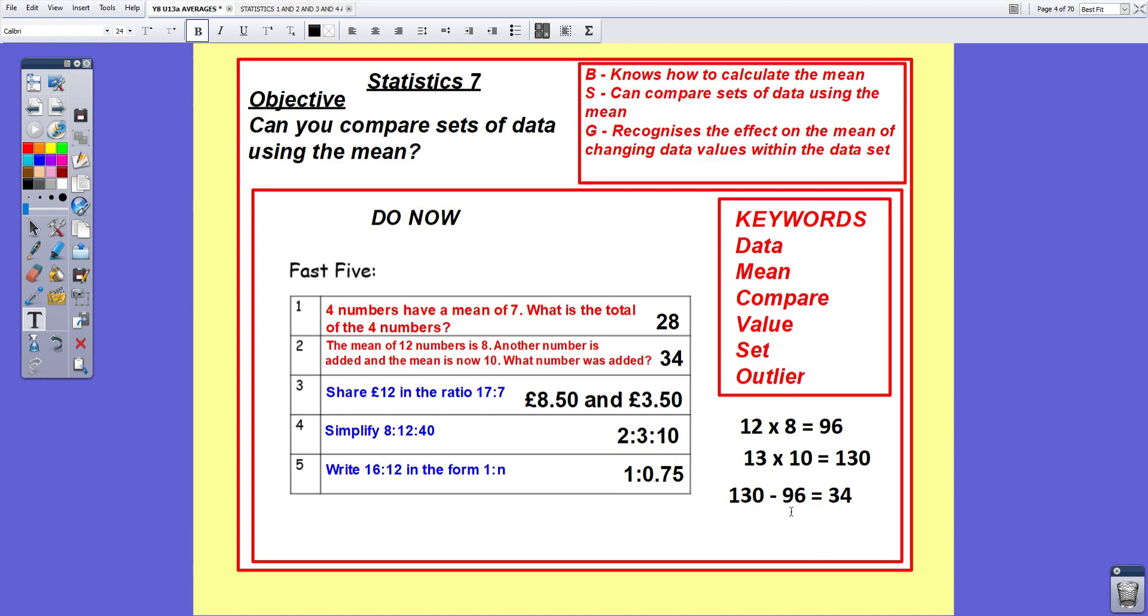Now the answers to these questions always look a bit wacky. We're adding one more number. The mean's only gone up two. How can the answer be a massive 34? If you think about it, the mean of all the numbers has gone up to 10, so each of those 12 numbers is increased by two. And two 12s is 24. And there's another 10 here, 24 and 10. There's our 34. That's just another way of thinking about it.